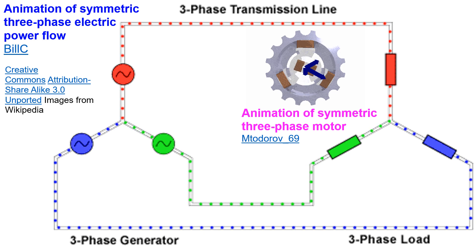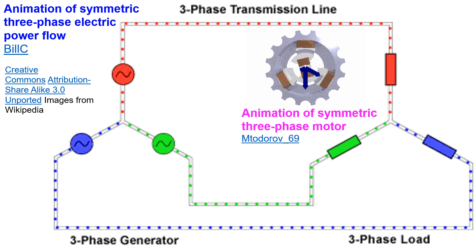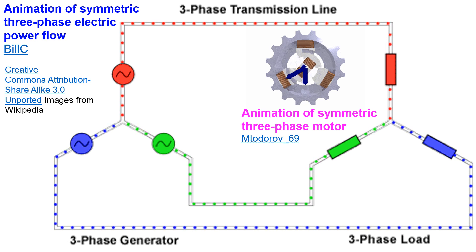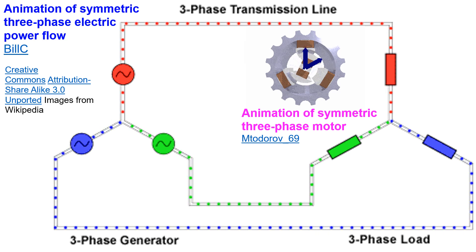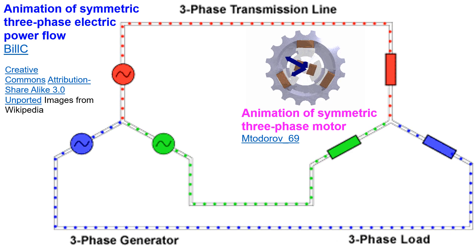Usual large generators generate alternating current with three phases so that three lines run along the high tension and low tension supply lines in addition to the ground or neutral line.